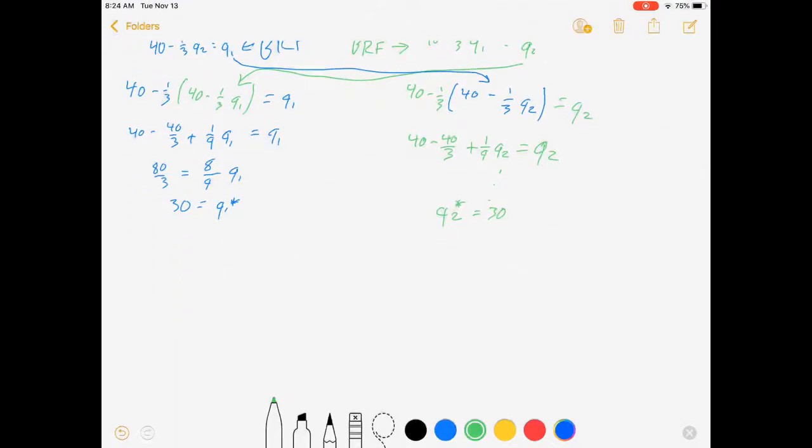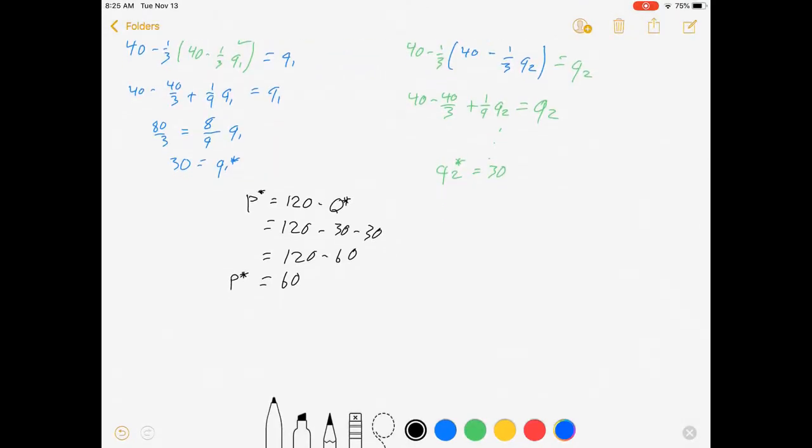Now let's have them choose their prices. Well, that's kind of given for us now. Our market price is equal to 120 minus q star, which is 120 minus 30 minus 30, which is 120 minus 60, which is 60. And let's also get the average total cost. Average total cost for firm one is q1 over 2, which is 15.